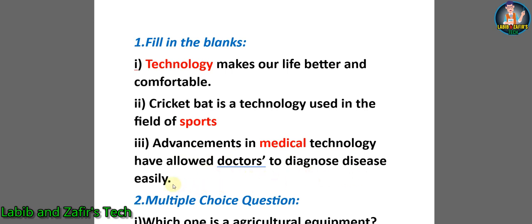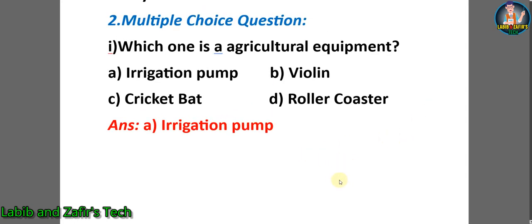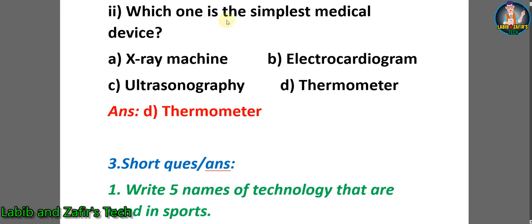Now let's go through some multiple choice questions. Number one: which one is an agricultural equipment? A) irrigation pump, B) violin, C) cricket bat, D) roller coaster. The correct answer is A) irrigation pump. Number two: which one is the simplest medical device? A) X-ray machine, B) electrocardiogram, C) ultrasonography, D) thermometer. The correct answer is D) thermometer.